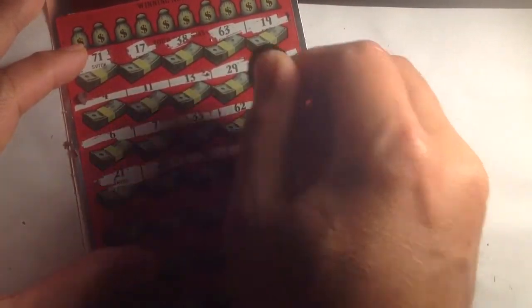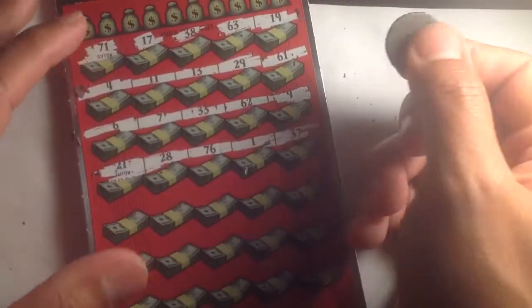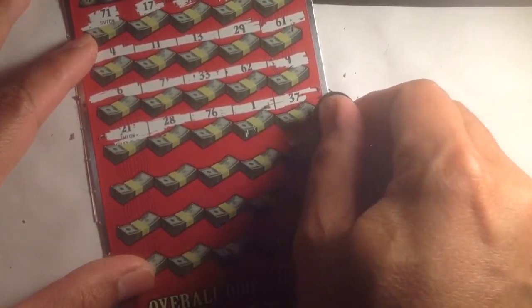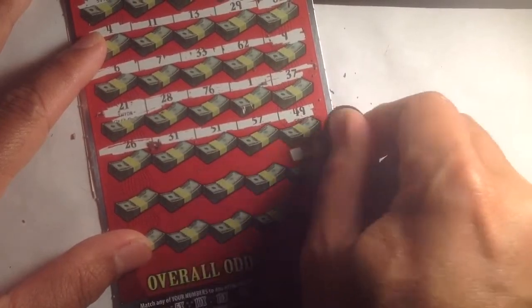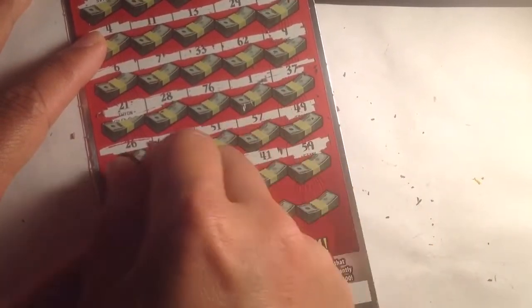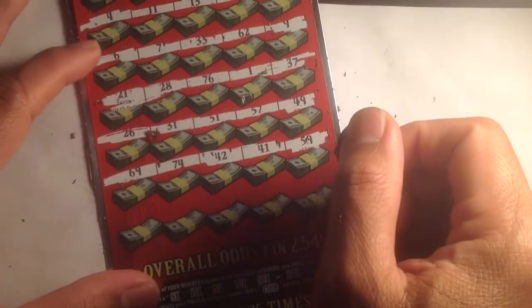I don't think we have any duplicate numbers. Yeah, we don't have any duplicate numbers. Oh, 69 is in here.